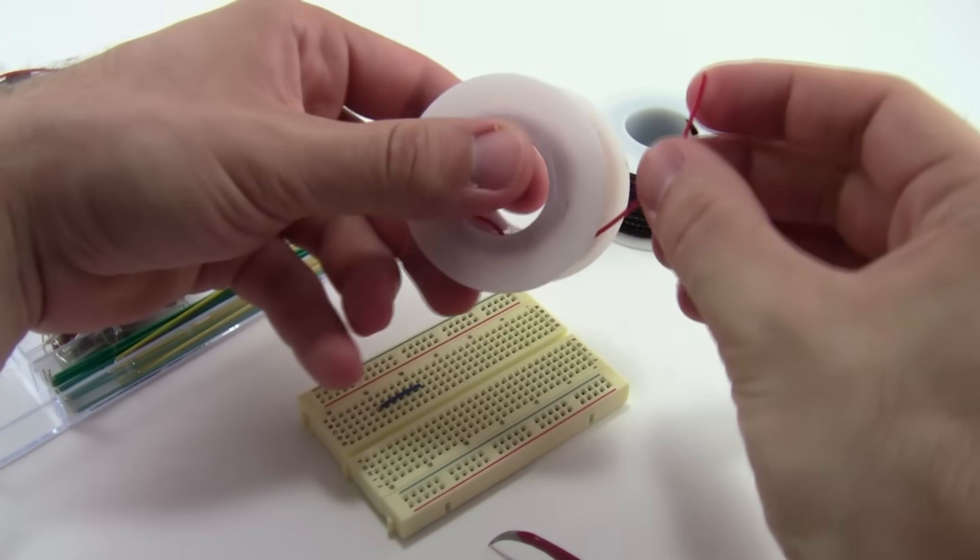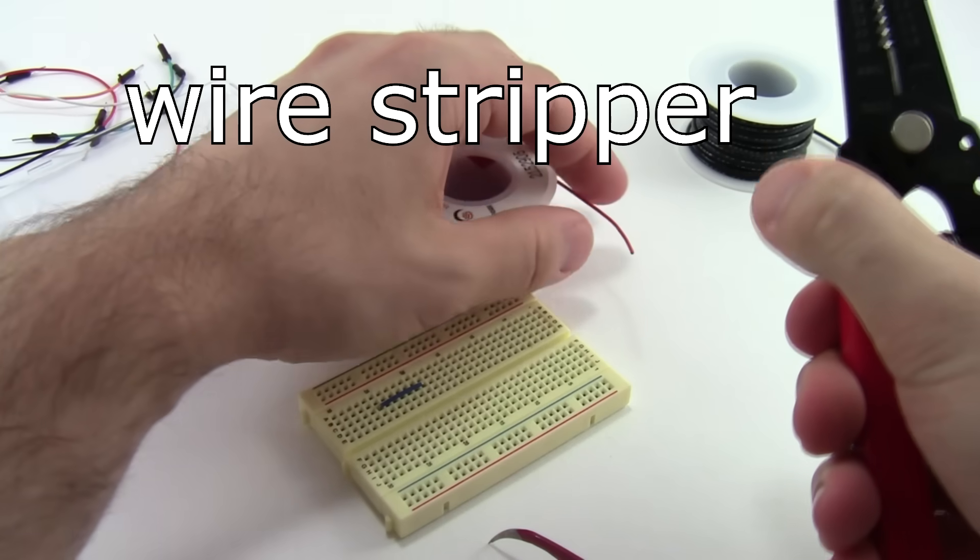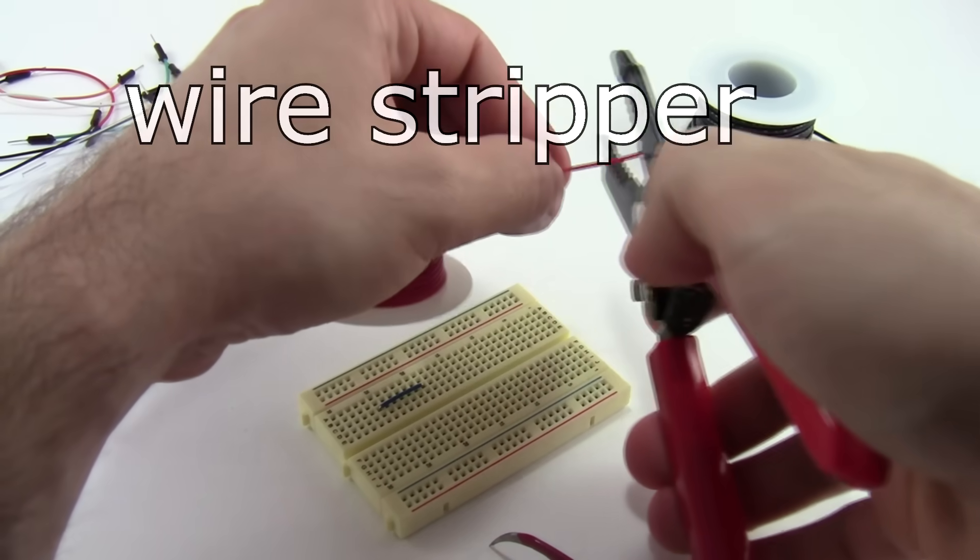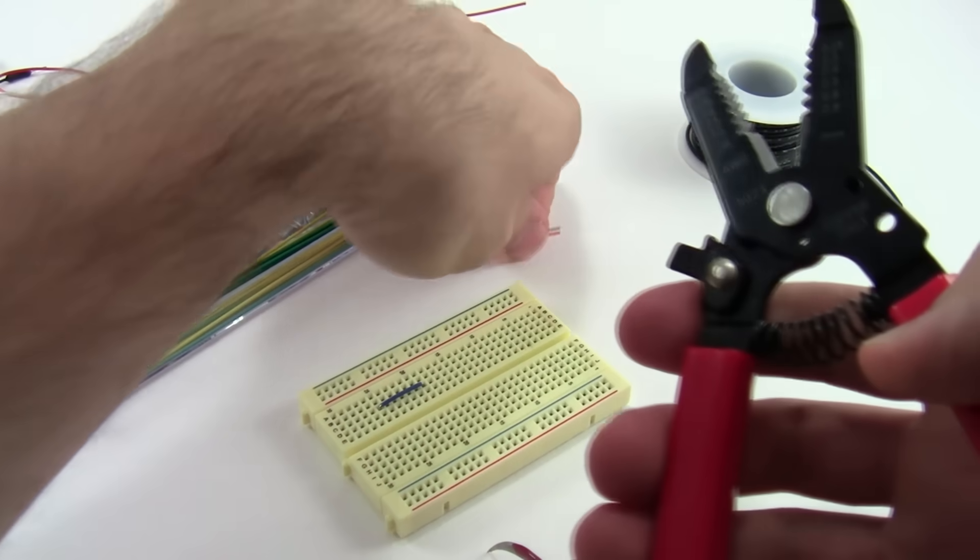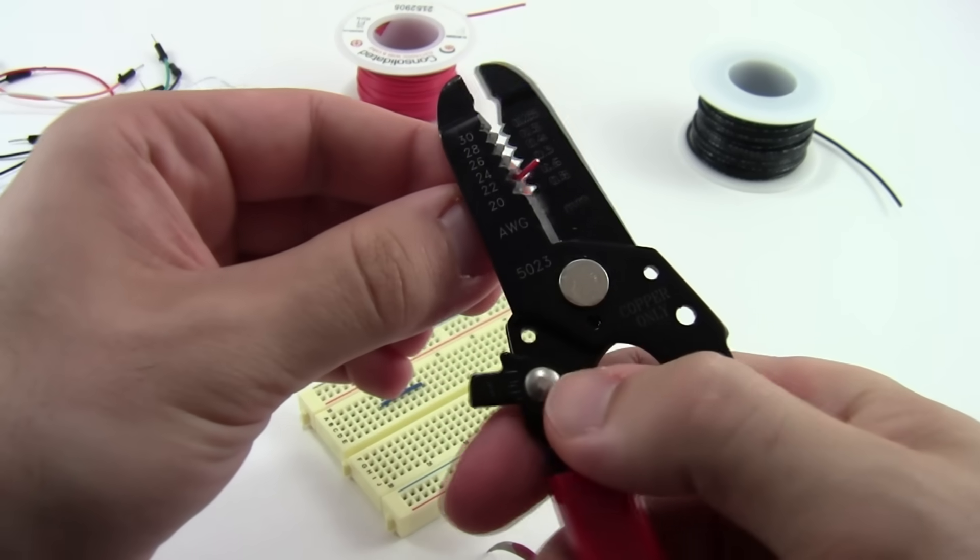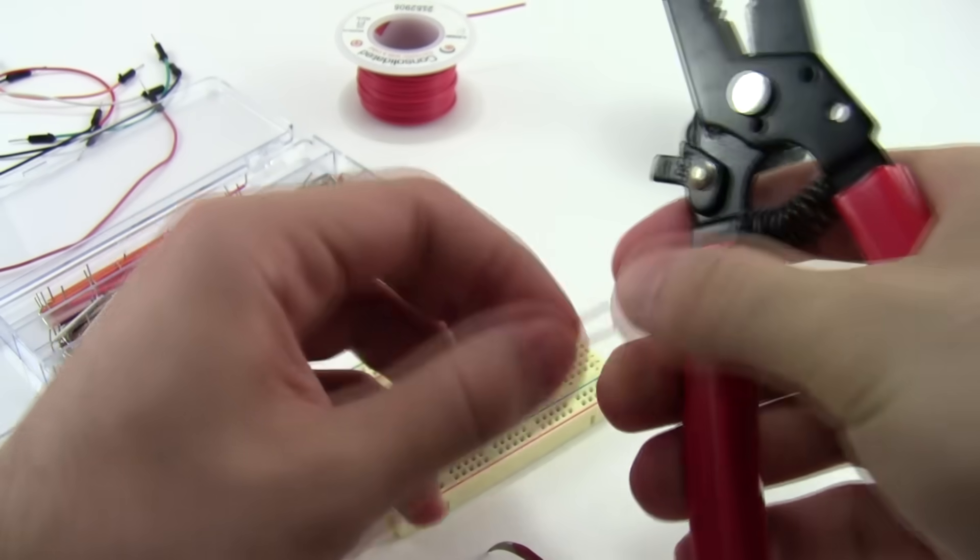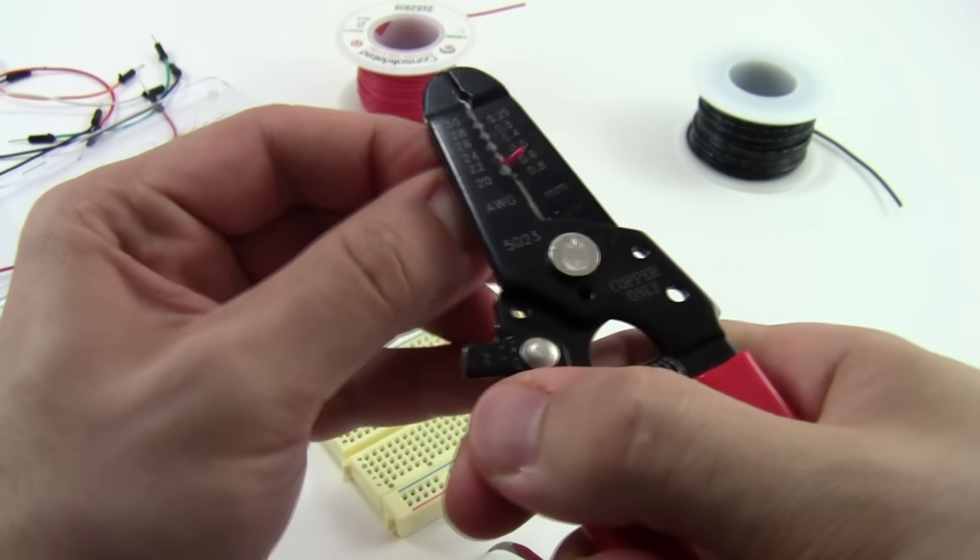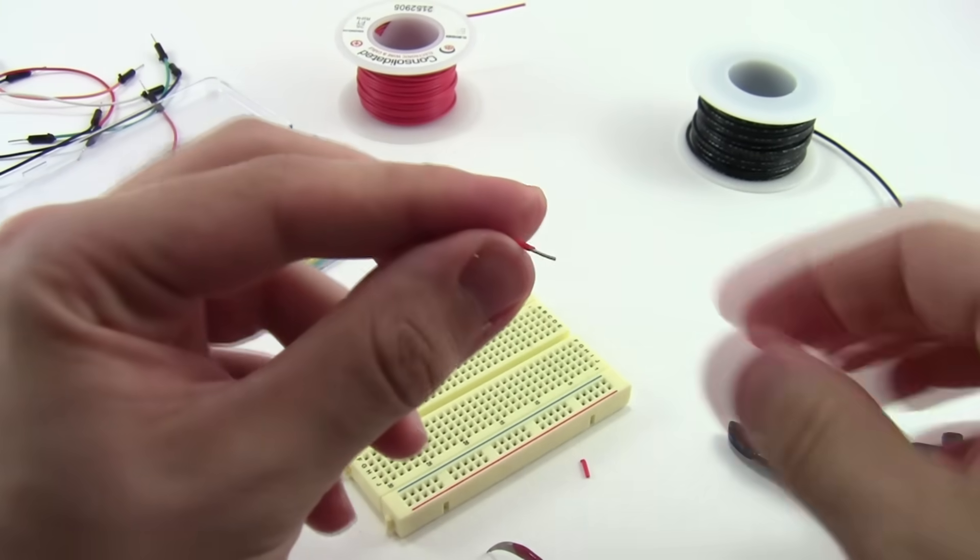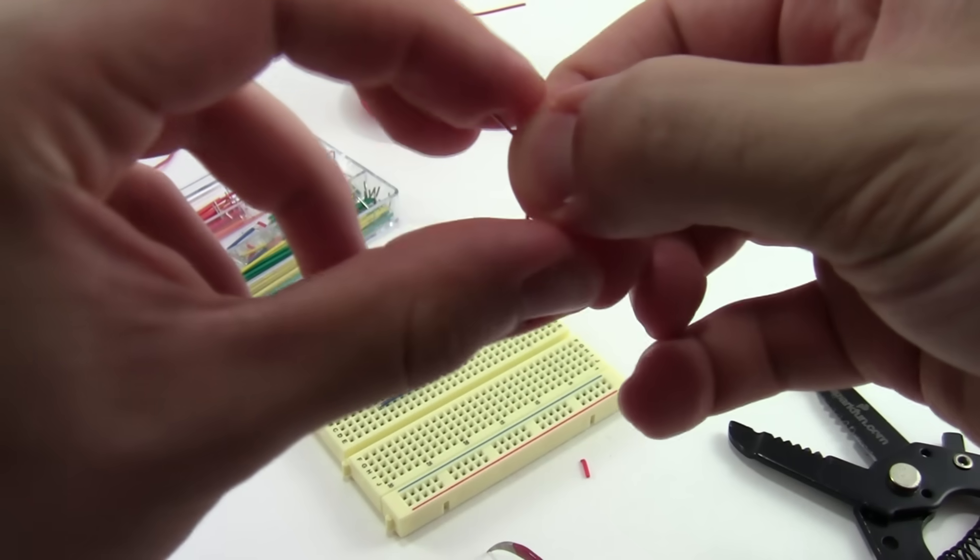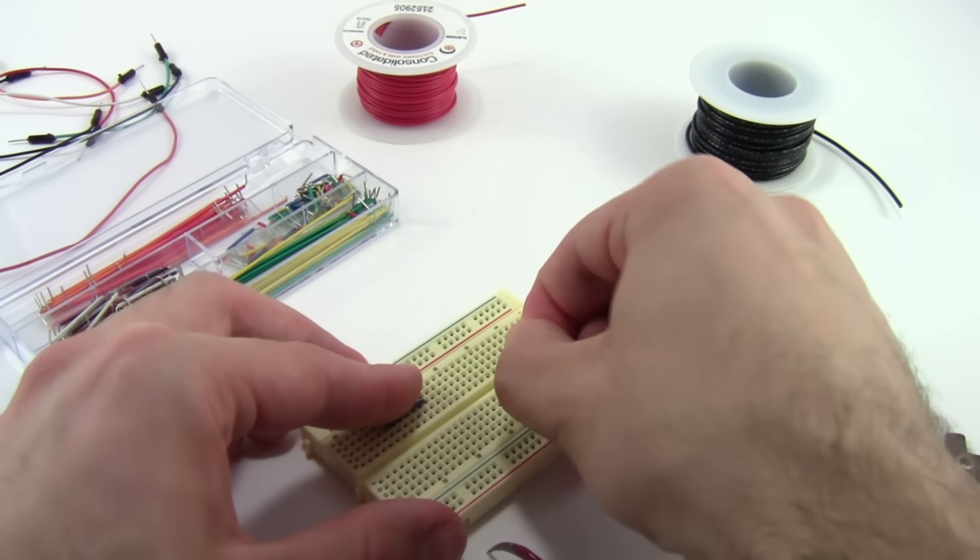The final option is to purchase special spools of wire called hookup wire and use a tool called a wire stripper to cut them to length and then strip off some of the insulation to make your own jumper wires. You can see here I'm just taking a spool of wire, cutting a short segment of it, then using the wire strippers to strip insulation off of each end. When you're done, you just have to bend the ends of the wire down and then you'll be left with a piece similar to what comes in the jumper wire kit that easily fits into the breadboard. The advantage here is that you can buy several spools of wire of different colors and then cut them to any length you want so you can color code your circuit.